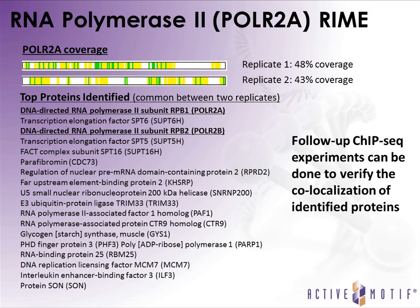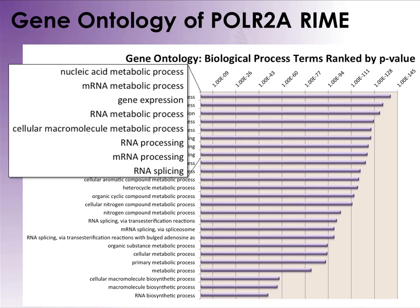The next data set is for RNA Pol2. Two replicates showed high coverage — 48% and 43% respectively. Among the top three identified proteins are two DNA-directed RNA Pol2 subunits, RBP1 and RBP2. You can then follow up this list of proteins with ChIP-seq experiments to verify co-localization with the factor you performed RIME on. You can also run the identified protein list through a gene ontology program — for Pol2 we identified several highly enriched GO terms including nucleic acid metabolism, RNA metabolic processes, and gene expression, which are exactly what you would expect, further verifying that the RIME experiment worked.